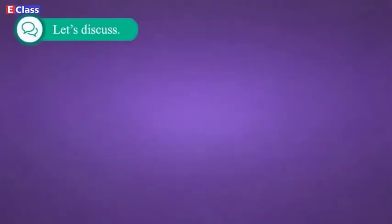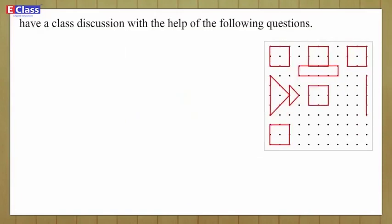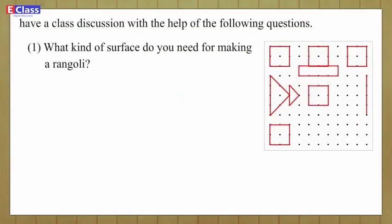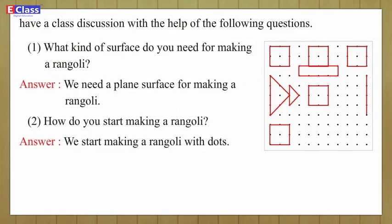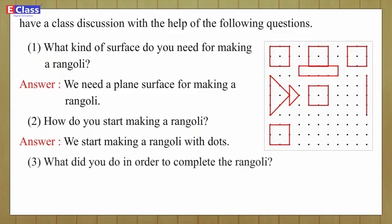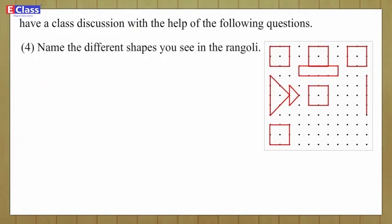Let's discuss: complete the rangoli, then have a class discussion with the following questions. One: what kind of surface do you need for making a rangoli? Answer: we need a plain surface. Two: how do you start making a rangoli? Answer: we start making a rangoli with dots. Three: what did you do to complete the rangoli? Answer: we joined dots with lines.